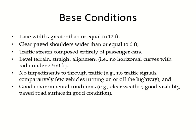Base or ideal conditions for two-lane highways include: lane width of 12 feet or more; clear paved shoulders at least 6 feet wide; traffic stream composed entirely of passenger cars; and level terrain with a very low gradient and straight alignment — meaning either perfectly straight or with a very large radius curve that doesn't affect speed.